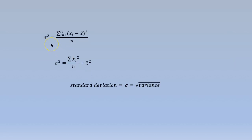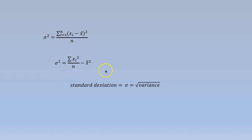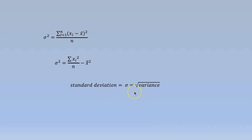Sigma squared is given by the formula: summation from i=1 to n of (xi minus x-bar) whole squared, divided by n. Simplifying, sigma squared equals summation of xi squared by n minus x-bar squared. Standard deviation sigma is the square root of sigma squared — in other words, standard deviation is the square root of variance.